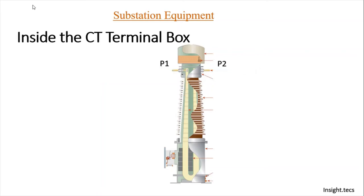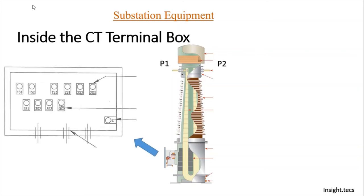Inside the CT terminal box. What is inside the CT terminal box? As you can see, there are a few outlets. Let us understand each one in detail. These are called as CT secondary terminals, then the CT tan delta point and CT earth point. This is a space for the cables to enter inside the CT terminal box.